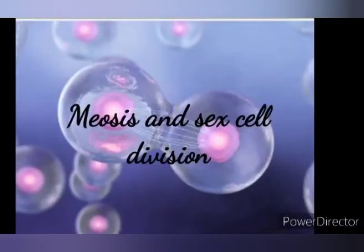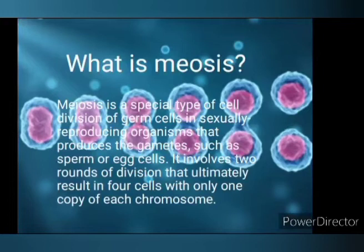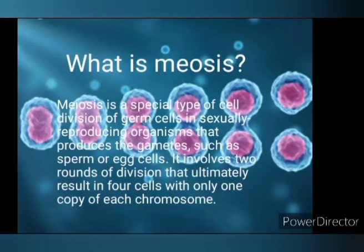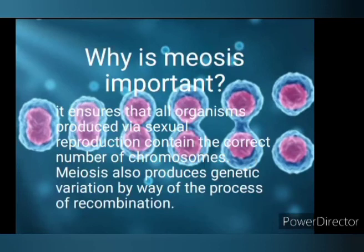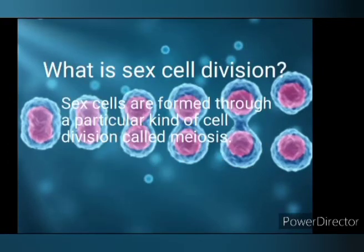Good day everybody. This is the next reporter, and today I am about to discuss meiosis and sex cell division. Meiosis is a special type of cell division which produces germ cells in sexually reproducing organisms — gametes such as sperm or egg cells. It involves two rounds of divisions which result in four cells with only one copy of each chromosome. Meiosis ensures that all organisms produced via sexual reproduction contain the correct number of chromosomes. It also produces genetic variation by way of the process of recombination.